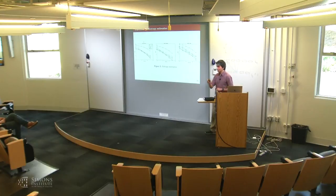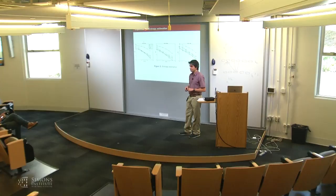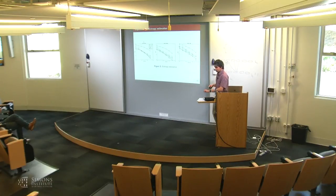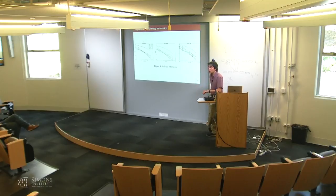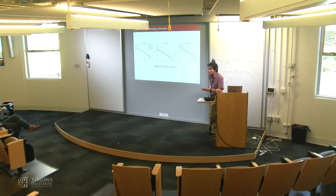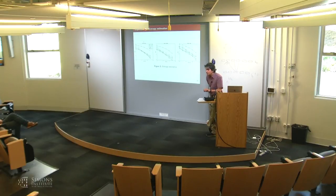Question: do you expect the problem to be easier under average-case assumptions rather than worst case? Our result is worst case — for any distribution you can get this guarantee. If you restrict to an average-case assumption over the set of distributions, it's presumably simpler, but I don't know how to exploit that additional information. It depends on how exactly you choose to make those assumptions.